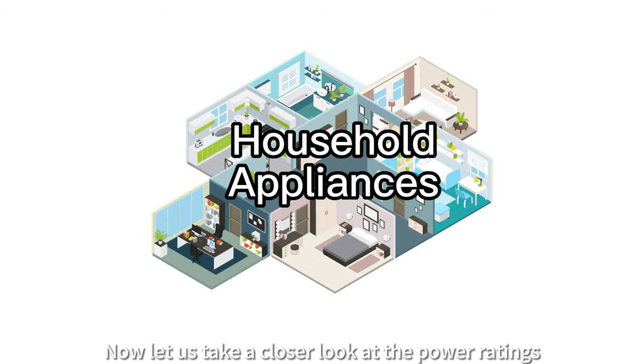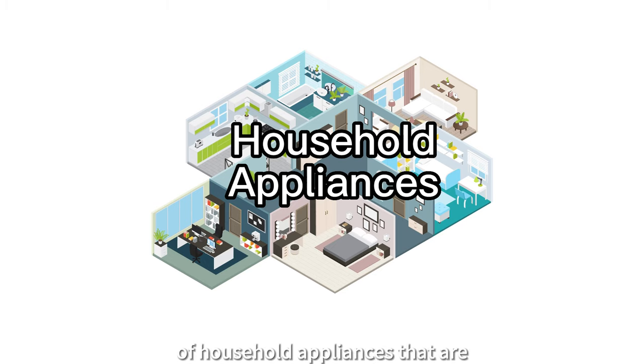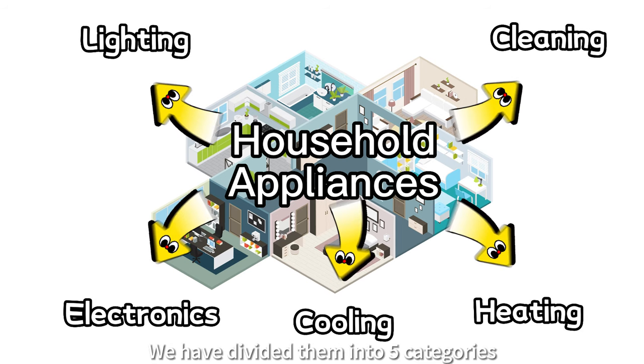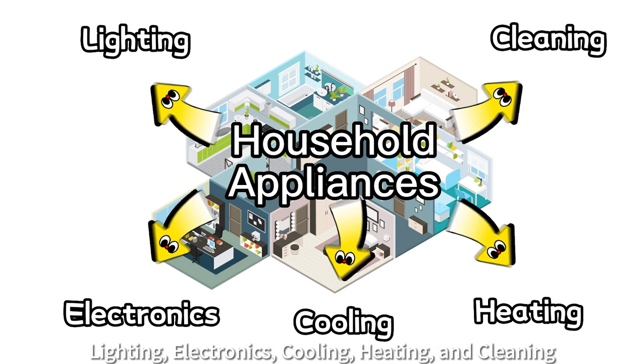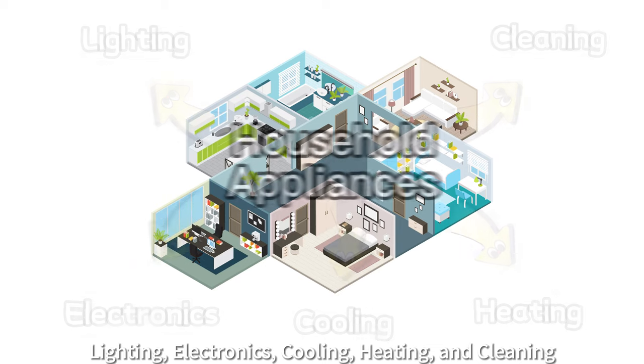Now, let us take a closer look at the power ratings of household appliances that are typically found in most homes. We have divided them into five categories: lighting, electronics, cooling, heating, and cleaning.